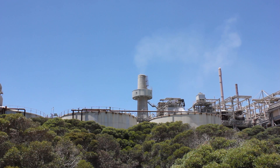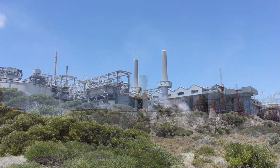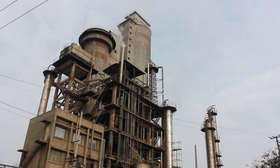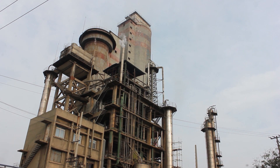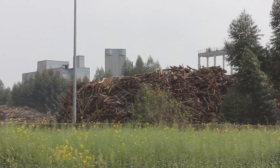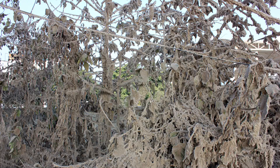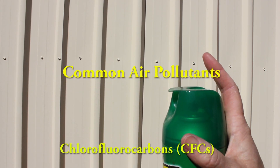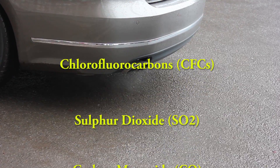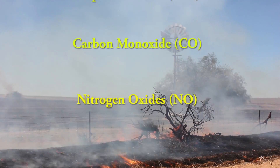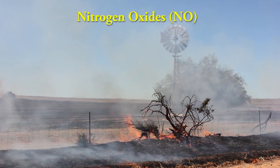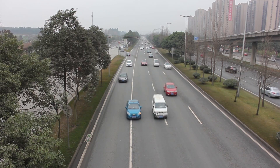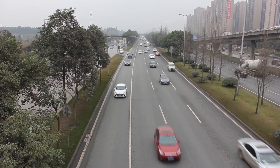Air pollution is the introduction of chemicals and particulates into the earth's atmosphere. Particulates are the microscopic solid or liquid matter floating in the air, including dust, smoke, pollen, spores, bacteria and viruses. Common gases that pollute the atmosphere include chlorofluorocarbons, sulphur dioxide, carbon monoxide and nitrogen oxides. These gases are produced by industry and motor vehicles and then released into the atmosphere.